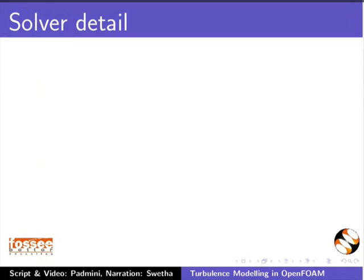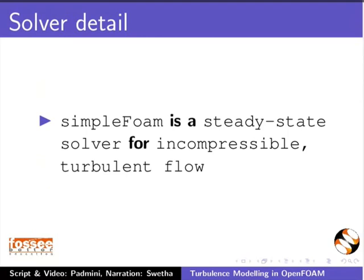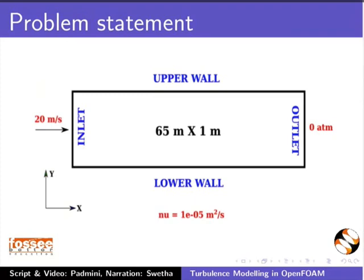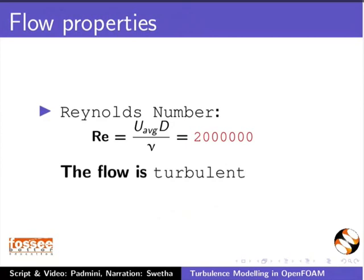We will use the SimpleFOAM solver to simulate this problem. SimpleFOAM is a steady-state solver for incompressible turbulent flow. The diagram shows a 2D channel of length 65 meters and width 1 meter. The kinematic viscosity is 1e-5 meter square per second, the inlet velocity is 20 meters per second, outlet pressure is set to 0 atmosphere, and the Reynolds number is 2 million. The flow is turbulent.